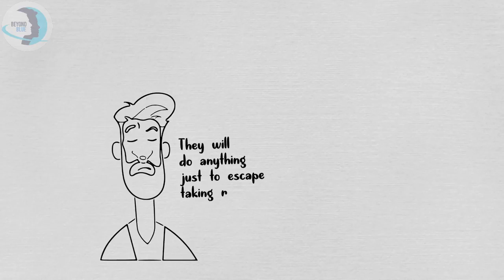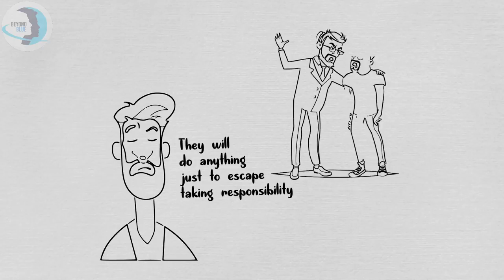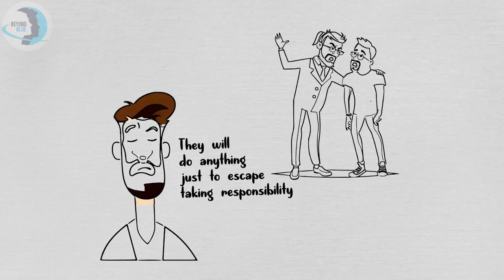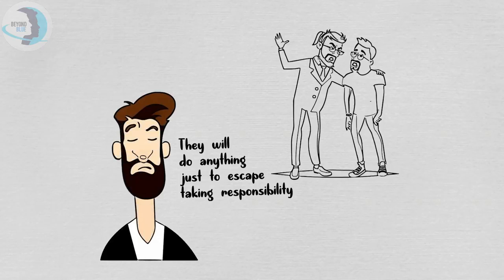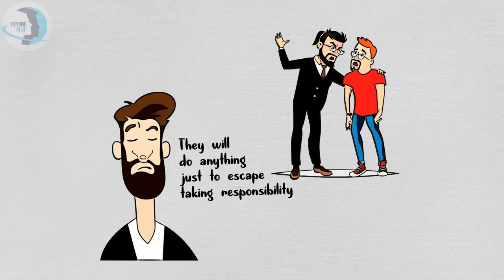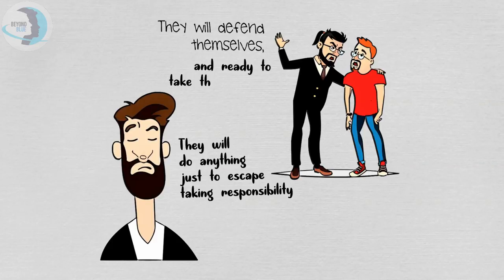They'll do anything just to escape taking responsibility for their actions. This is the major reason they're very good at lying: because they don't want to be held accountable for their actions. They never admit mistakes or take to a fault, but rather will defend themselves. They do this very well and are even ready to take that defense to their graves.